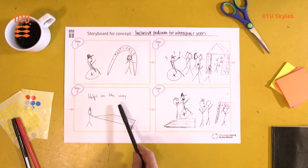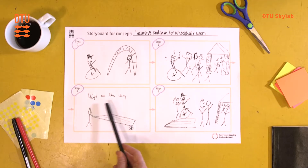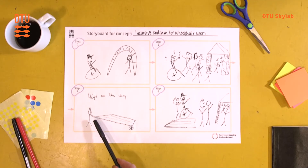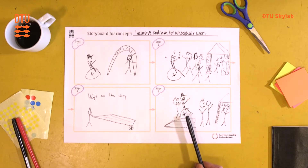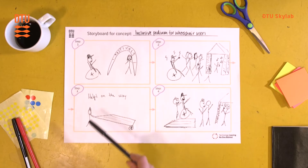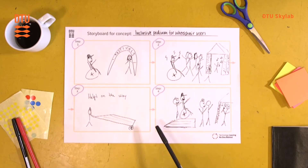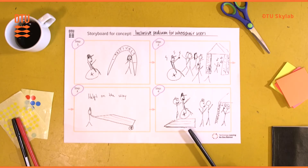The third step is the beginning of your concept where help is on the way — a festival staff member arrives with a portable podium, helps the wheelchair user onto it, and finally the wheelchair user can see the stage and is very happy. In that sense, you create a storyline which creates a deeper understanding of a concept.